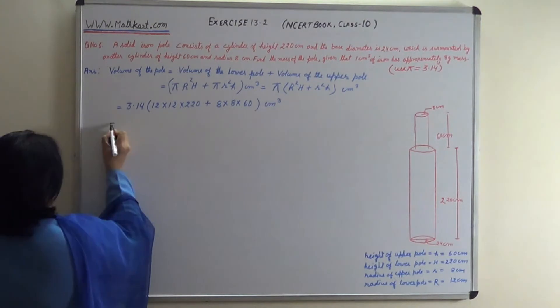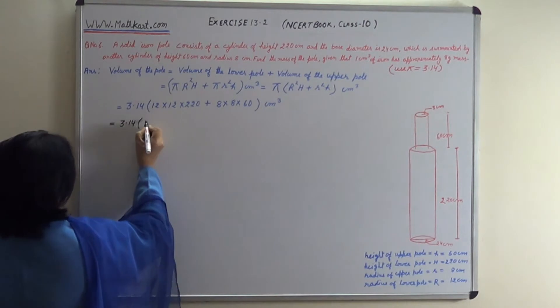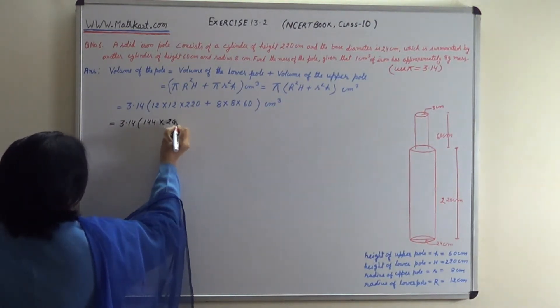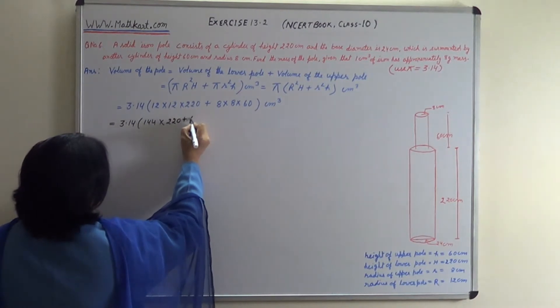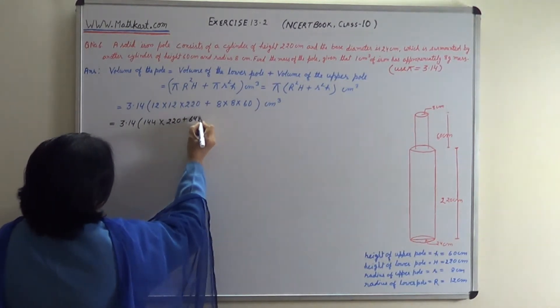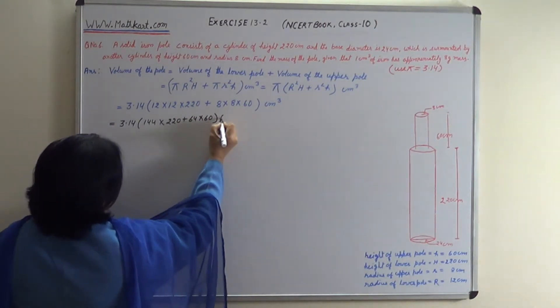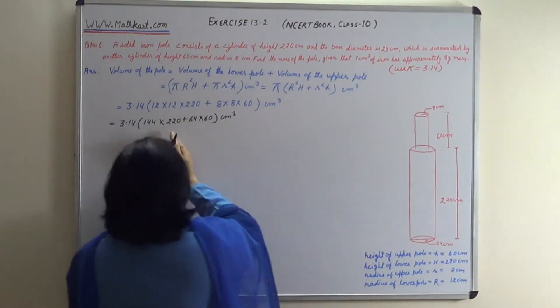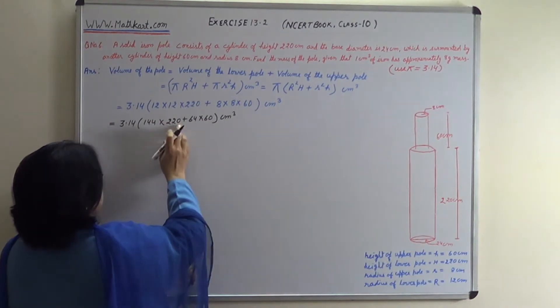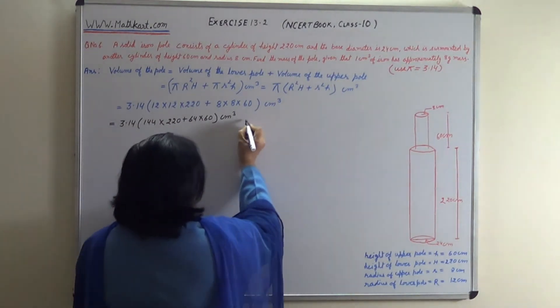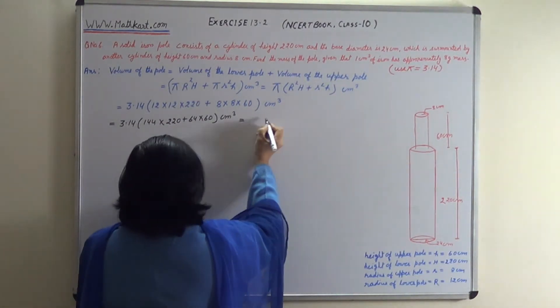This equals 3.14 into 12 square which is 144, into 220, plus 64 into 60 cubic cm. When we multiply these, this equals 3.14 into 31,680 plus...